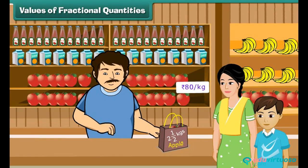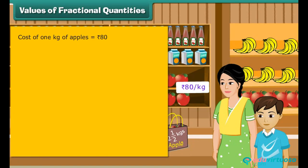Values of fractional quantities: let us now learn to compute the values of fractional quantities. Rishabh's mother is in the fruit market. She has bought two and half kg's of apples, which cost rupees eighty a kg. How much money did she pay to the fruit seller? Cost of one kg of apples is rupees eighty. Cost of two and half kg's of apples is equal to two and half multiplied by eighty.